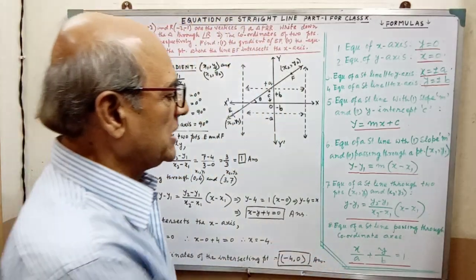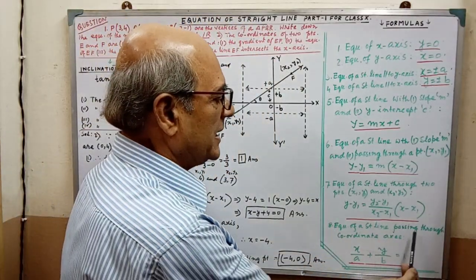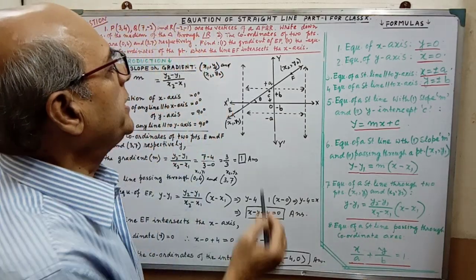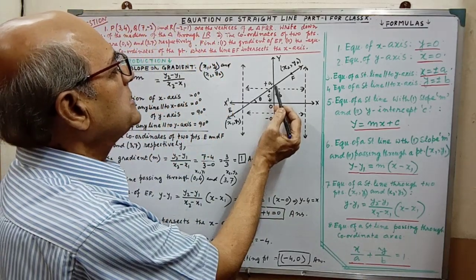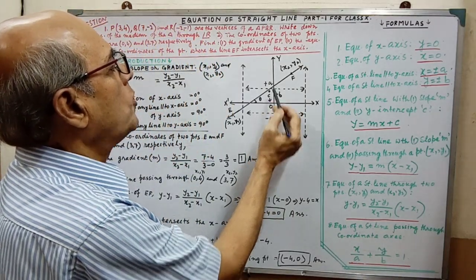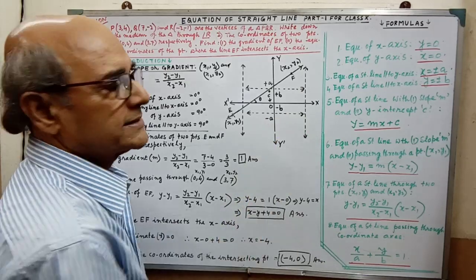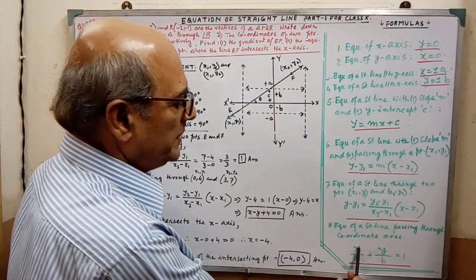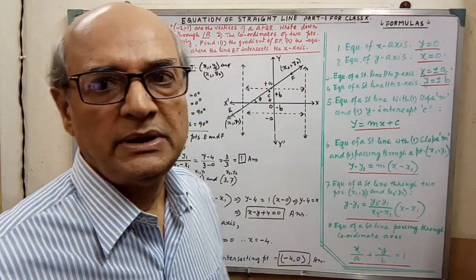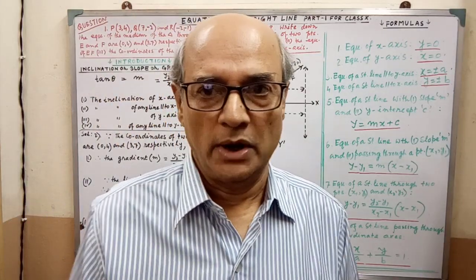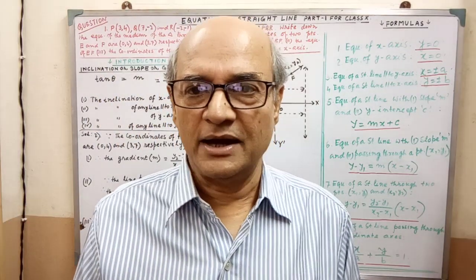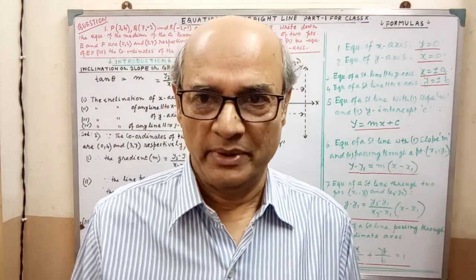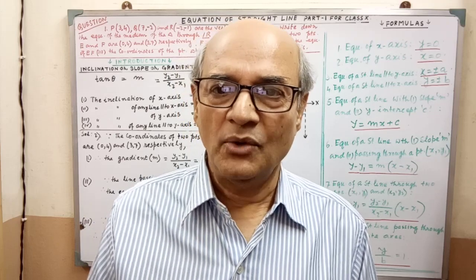And last, the equation of a straight line passing through both coordinate axes — meaning passing through both the y-axis and x-axis. Then the equation will be x by a plus y by b equal to 1. These are the formulas you have to remember.